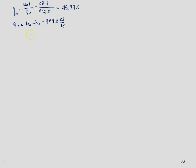Now we can get the overall efficiency. The expression is: thermal efficiency equals net power divided by q_in, times the electrical efficiency — electrical power divided by the mechanical net power. These net power terms cancel, so we just multiply 0.4539 (the thermal efficiency) times 0.96 (the generator efficiency), which gives 43.71 percent.